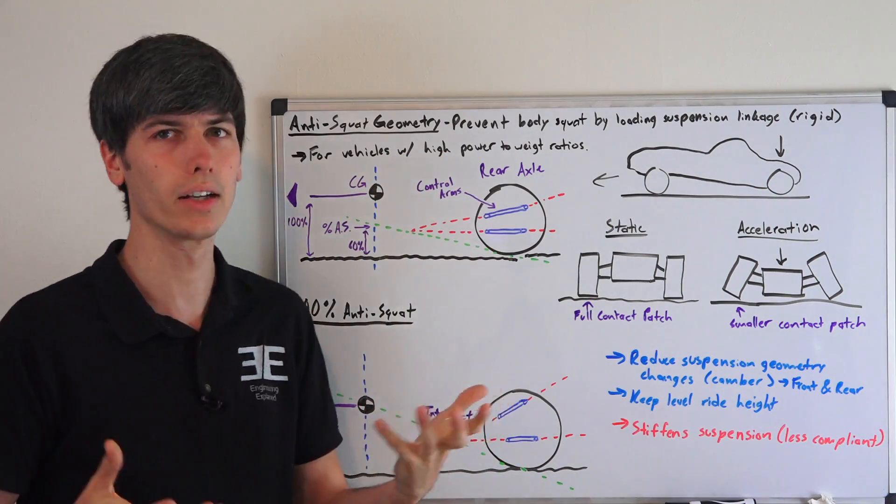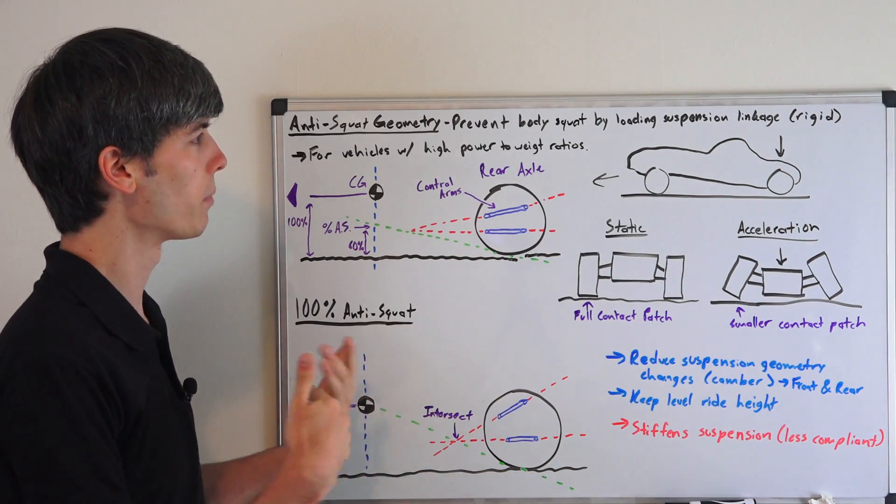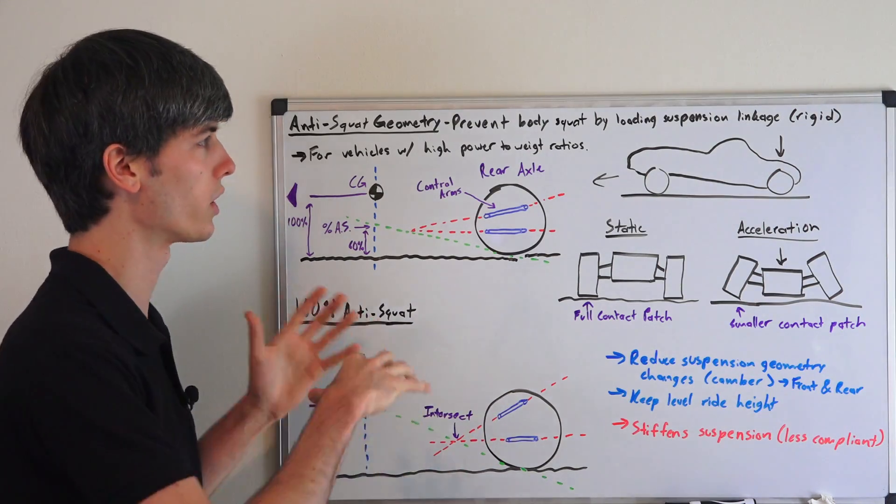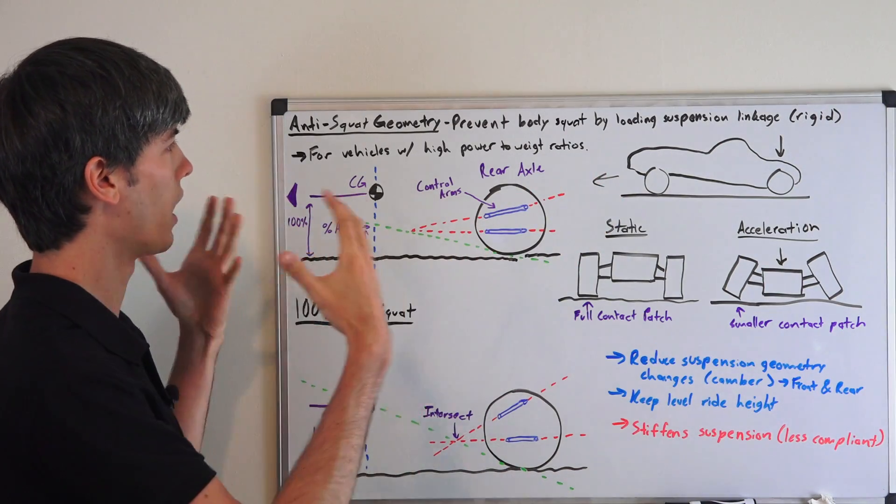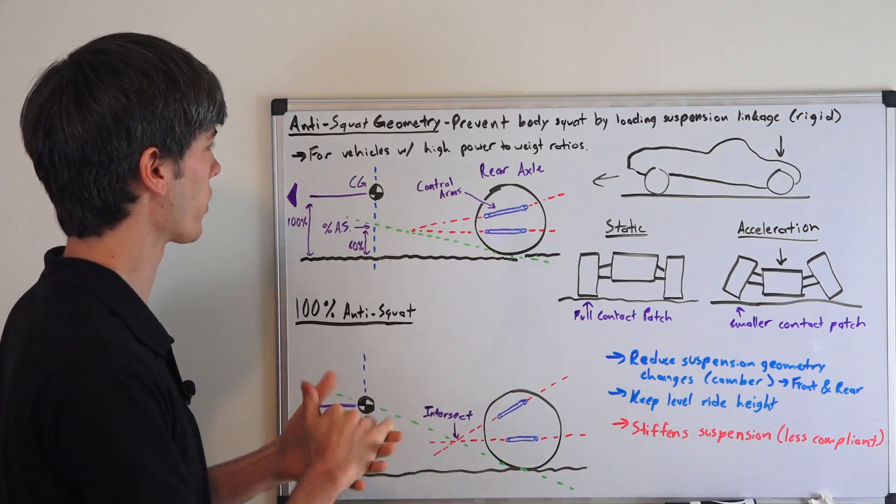Typically this is going to be done with vehicles with really high power to weight ratios because they're the ones that are going to have enough acceleration in order to produce a significant body lean back towards the rear under acceleration.